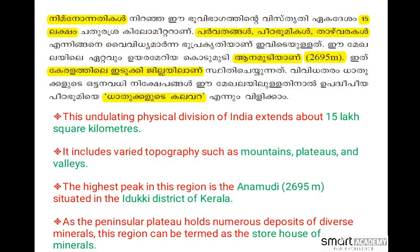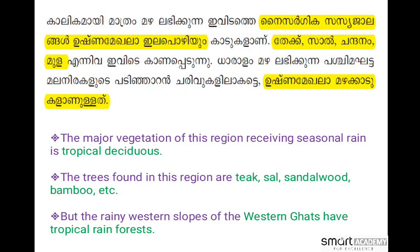The major vegetation of this region, receiving seasonal rain, is tropical. The trees found in this region are teak, sandalwood, bamboo etc. But the rainy western slope of the Western Ghats has tropical rainforest.